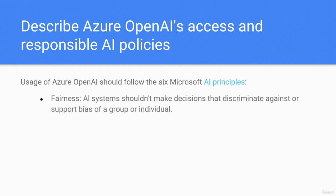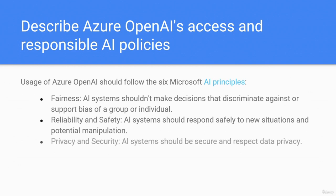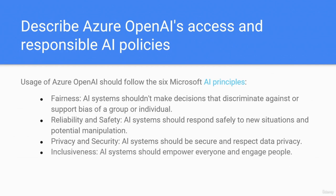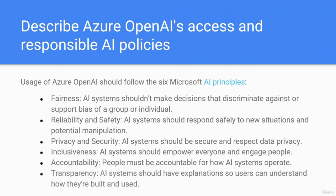Fairness: AI systems shouldn't make decisions that discriminate against or support bias of a group of individuals. Reliability and safety: AI systems should respond safely to new situations and potential manipulation. Privacy and security: AI systems should be secure and respect data privacy. Inclusiveness: AI systems should empower everyone and engage people. Accountability: people must be accountable for how AI systems operate. Transparency: AI systems should have explanations so users can understand how they are built and used.